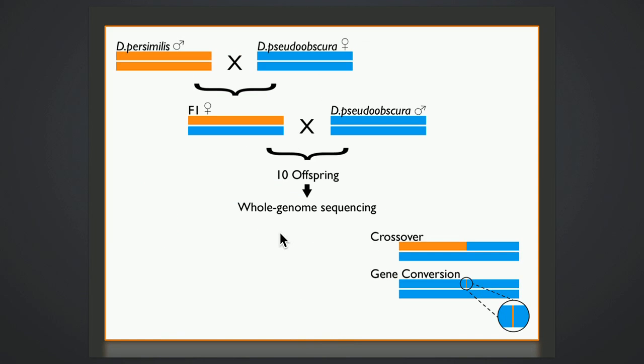So this is what one of our crosses looks like. This is the interspecies cross where we're starting with two highly inbred homozygous lines, crossed to yield a heterozygous F1, crossed again to the same line of pseudoobscura used in this first cross. And whole genome sequencing of the offspring reveals where recombination has occurred.